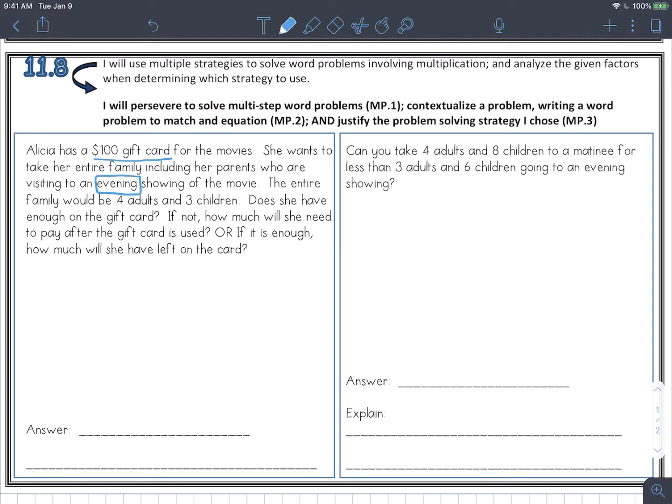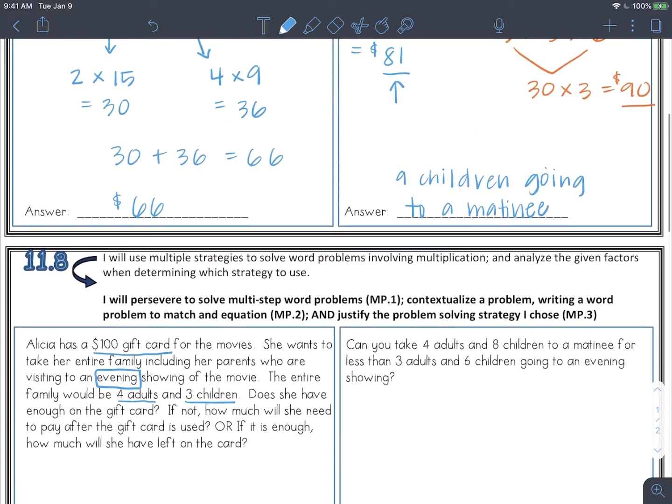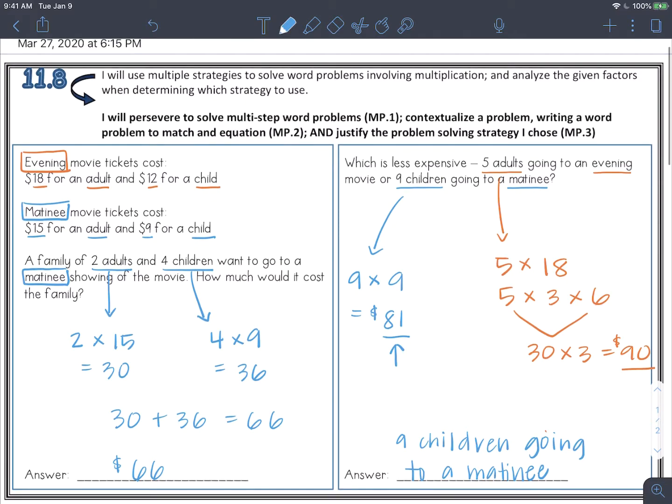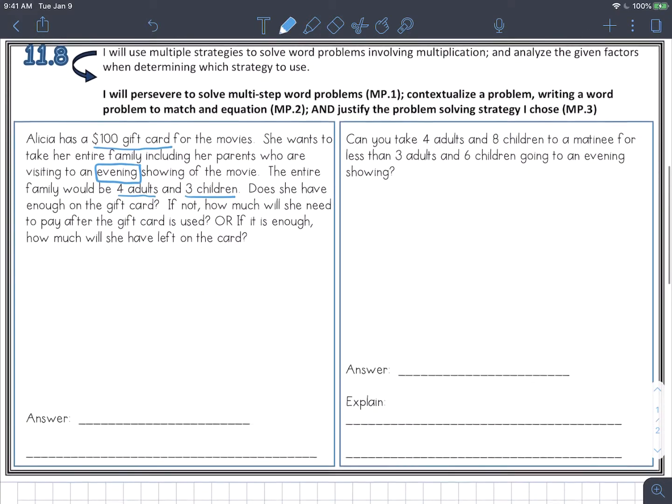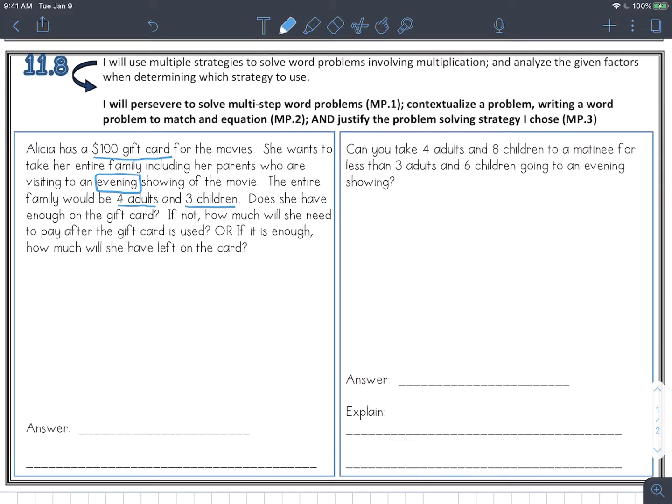So go ahead and go back in to your word problem and mark up all the facts that they give us, all the information. So let's just see how much it would cost for the family to go. Going back and checking the prices for your tickets. And they're going to the evening showing. So you can go ahead and calculate for four adults. That would be four times 18. For three children, that would be three times 12. You can solve these separately and then add them.